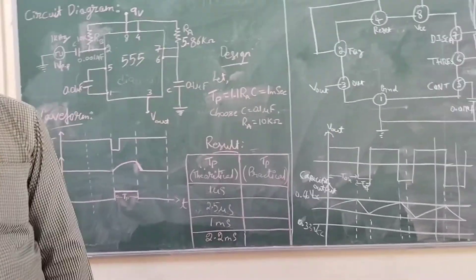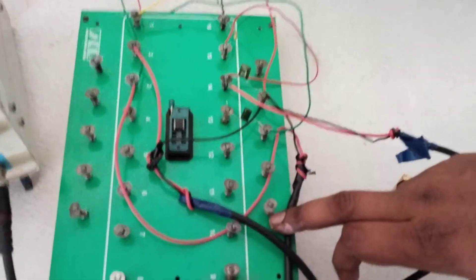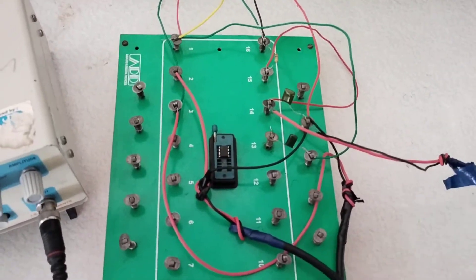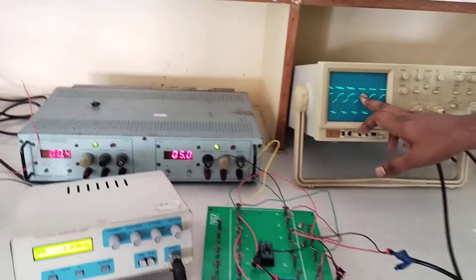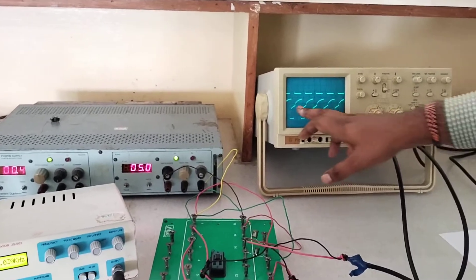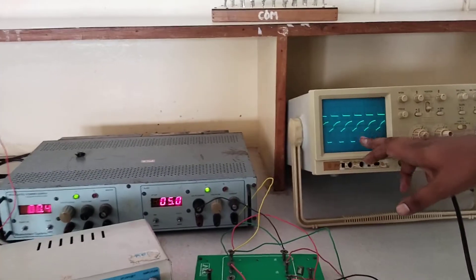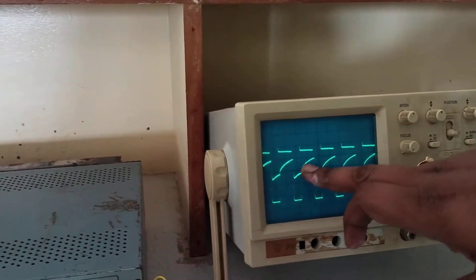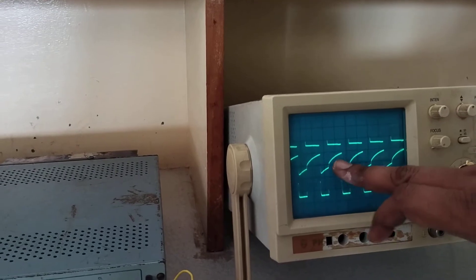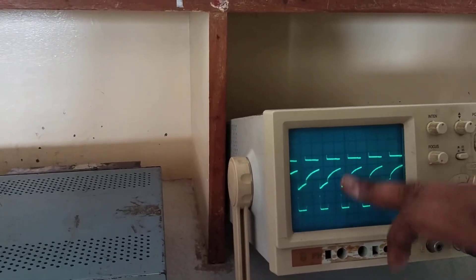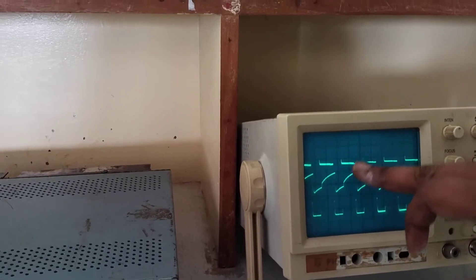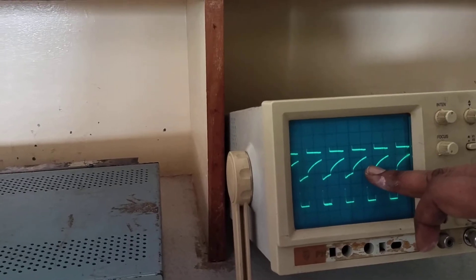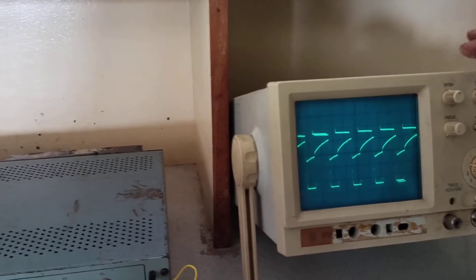This is the circuit diagram of the monostable multivibrator that I explained on the board — same thing I have rigged up the circuit. And this is the output waveform. This is the charging and discharging capacitor output. This is the output pulse width. You can observe here — whenever you are giving the pulse, at that time it is going to charge. Up to what extent it is going to charge: we designed TP as 1 millisecond, up to that it is going to charge. After 1 millisecond, it is going to discharge. You can observe the capacitor output. This is the practical output.